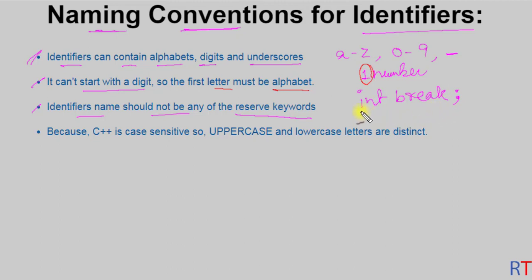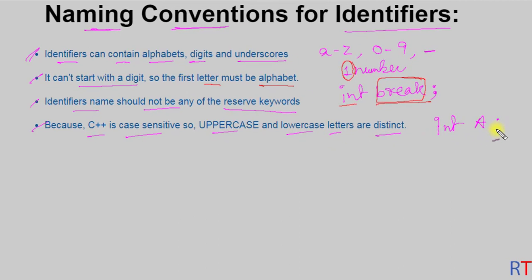Fourth, because C++ is a case-sensitive language, uppercase and lowercase letters are distinct. If we have one variable like 'int A' and another variable like 'int a', C++ will interpret both of these variables separately because it is case-sensitive.